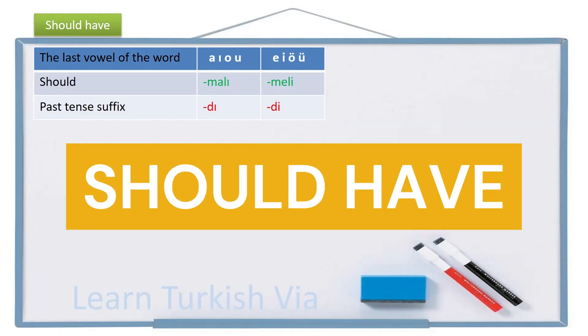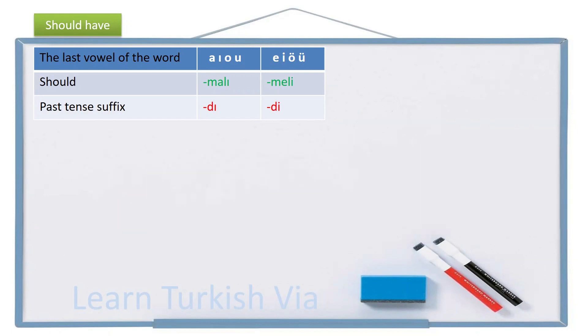Hello friends, merhaba arkadaşlar. In our previous lesson, we learned about should. And in this lesson, we will continue with should have, which is the past form of should. We use this grammar form when we talk about past events that we didn't do and we regret about. Let's see an example sentence to understand it better.